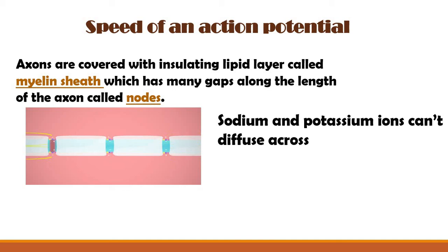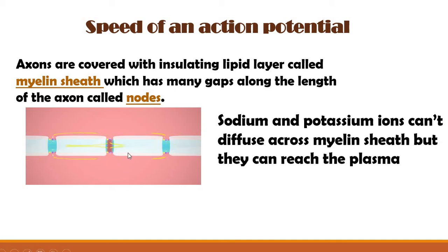Sodium and potassium ions cannot diffuse across the myelin sheaths because it consists of lipid layers, but they can diffuse through these nodes. So if the axon is covered with myelin sheaths, sodium and potassium ions only need to diffuse through these Ranvier nodes, which increases the speed of the action potential.